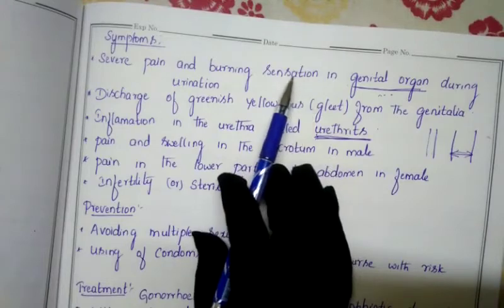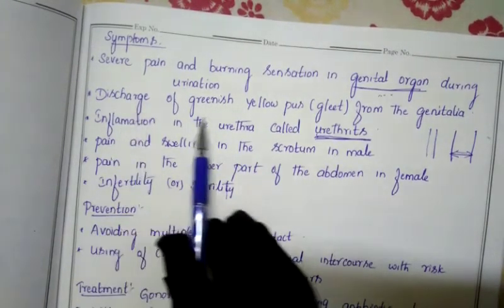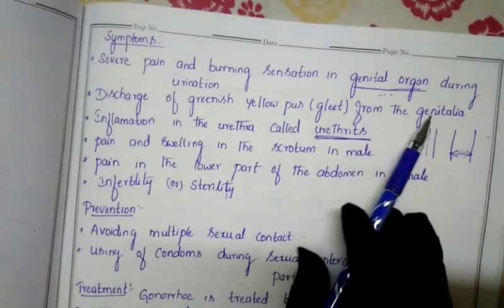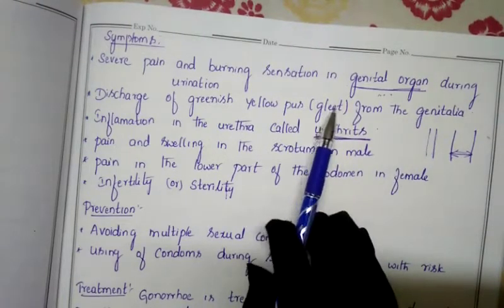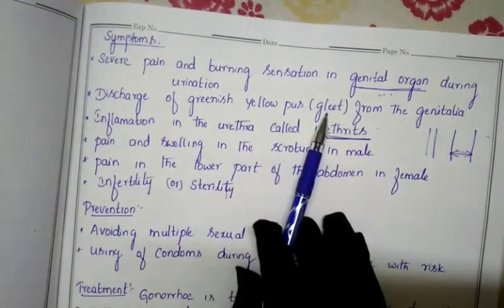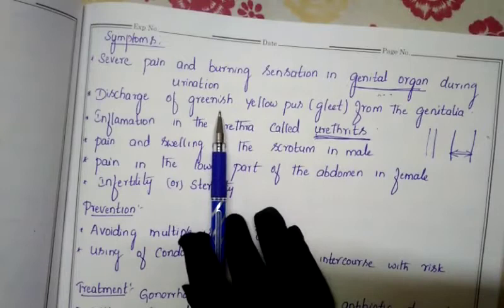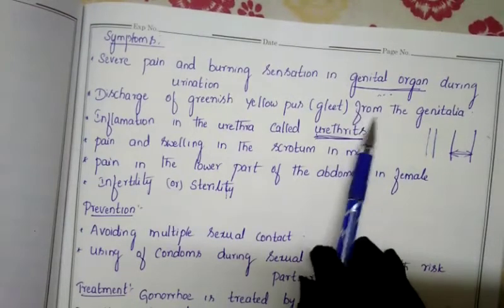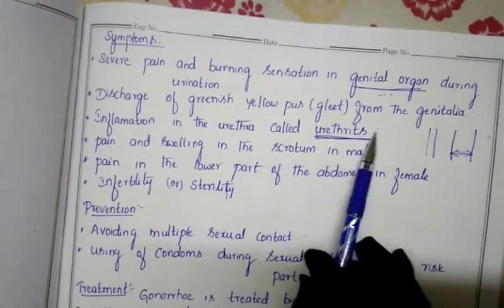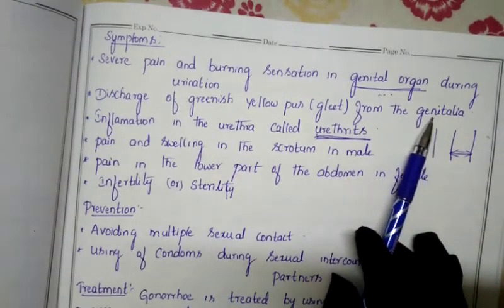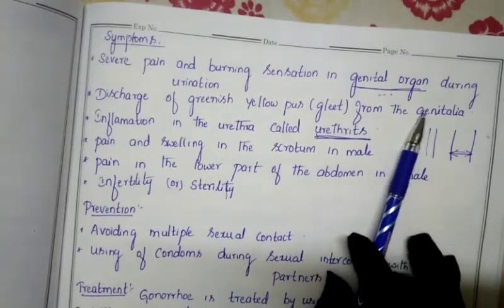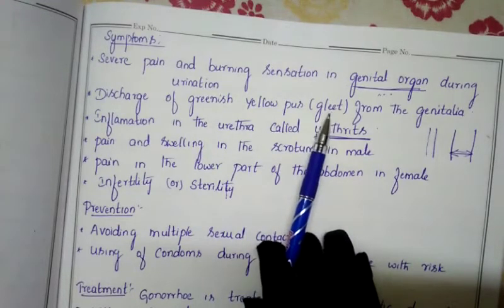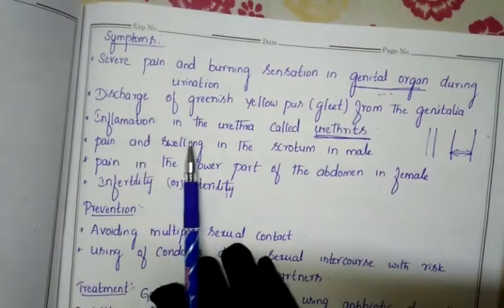The second symptom is the discharge of greenish-yellow pus called gleet from the genitalia. Gleet is a greenish-yellow colored pus secreted from the external organs — the penis in males and the vulva in females.